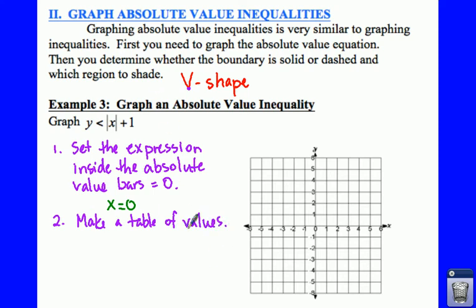And when you make your table, we're going to just plug in five points here. So we're going to say x and y, plug a zero in the middle, negative one on the left, negative two on the left, one and two on the right.